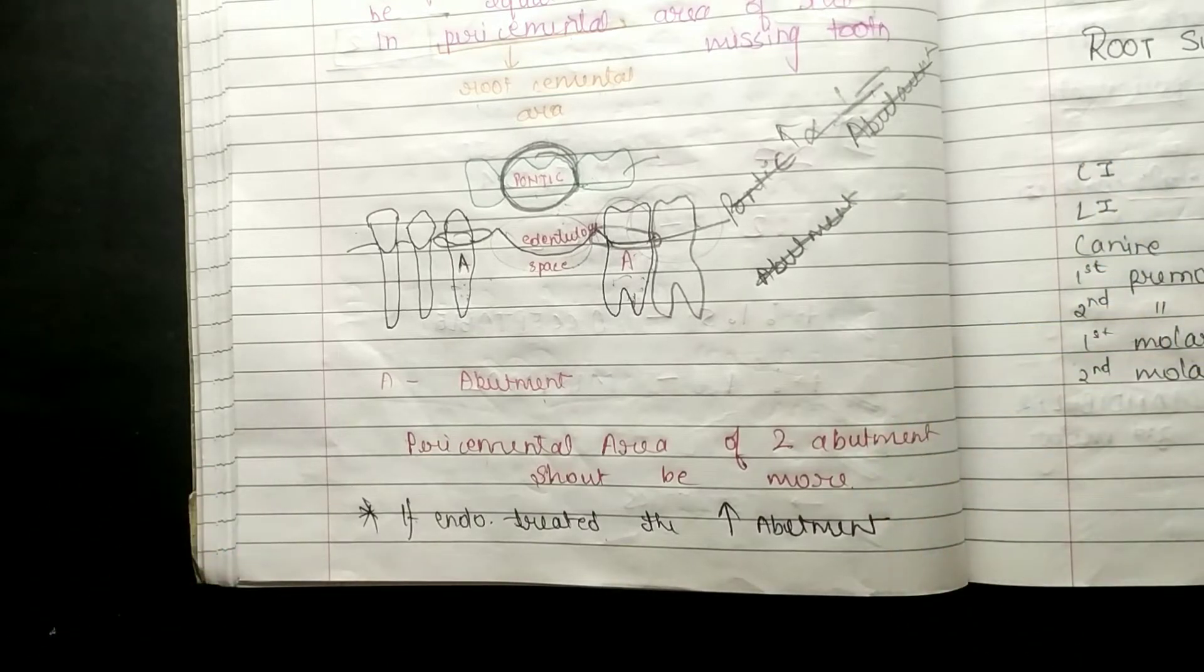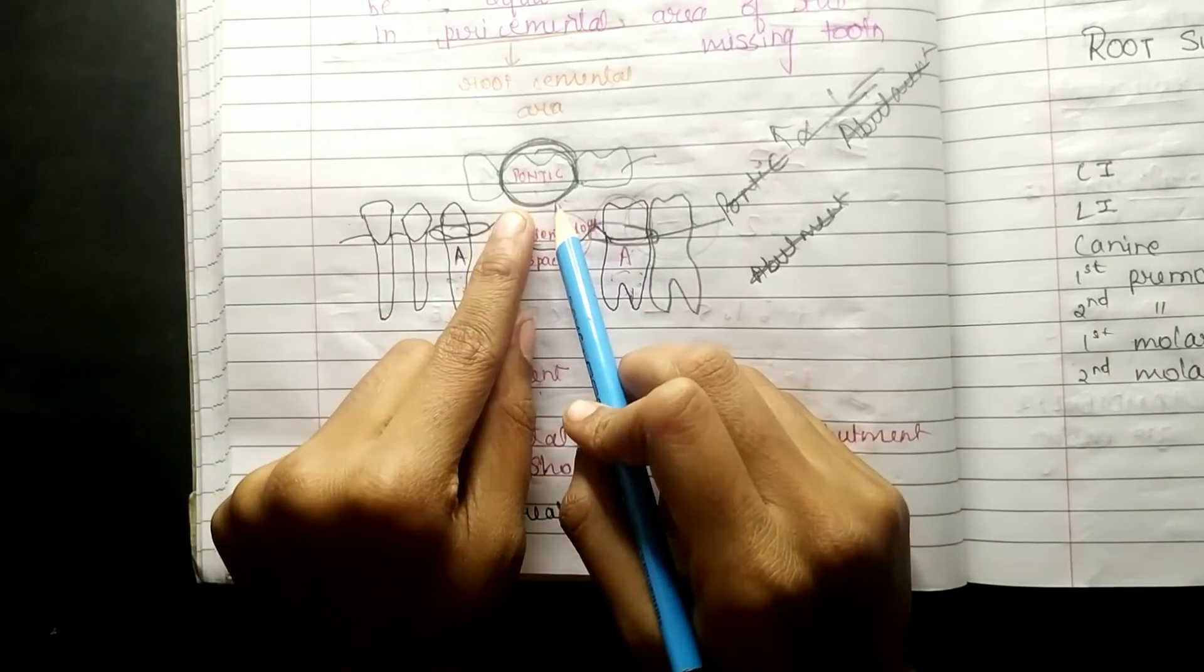So the pericemental area of two abutments should be more than a pontic.